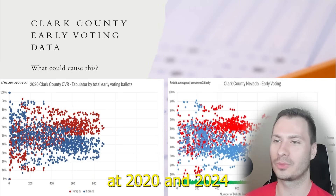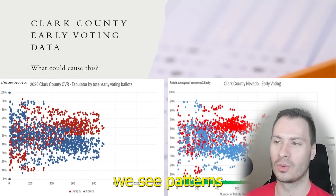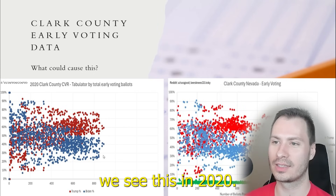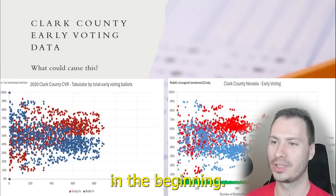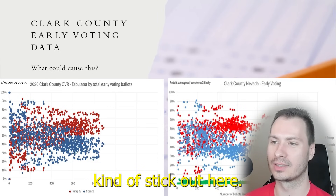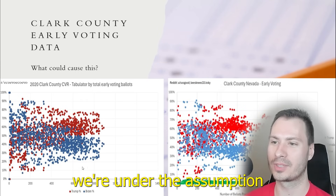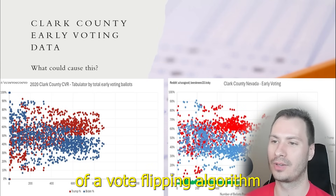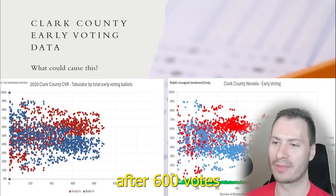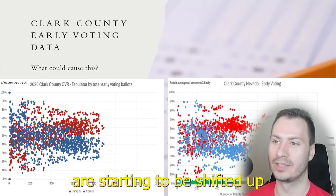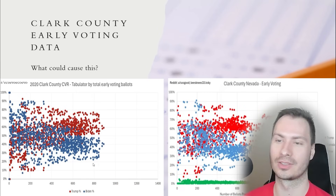When we look at 2020 and 2024 for early voting in Clark County, we see patterns that don't match the mail-in voting distribution. Specifically in 2020, we see more of that chaotic normal distribution in the beginning, but then after about 600 votes fed into each tabulator, we start to see this separation. Both groups kind of stick out. Under the assumption this is manipulation and that Harris was a popular candidate, this would be representative of a vote-flipping algorithm — after 600 votes, we start to see separation percentages, with votes being shifted up for Trump and down for Harris.